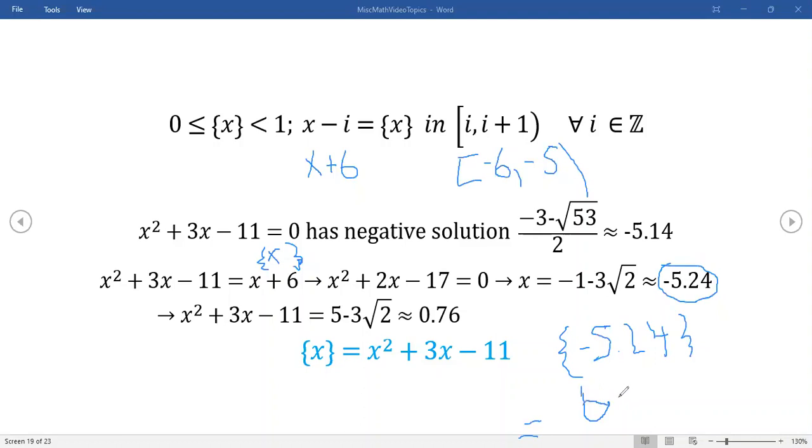6 minus 5.24 is this value right here right. So see it's kind of crazy, I would never figure this out on my own without doing it like this. We actually get a number.